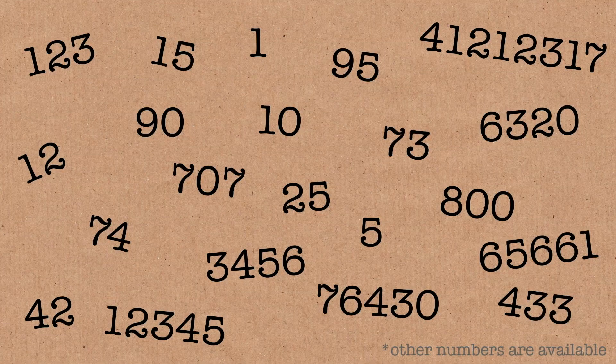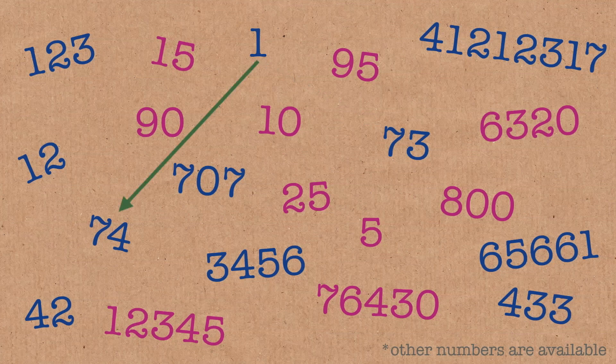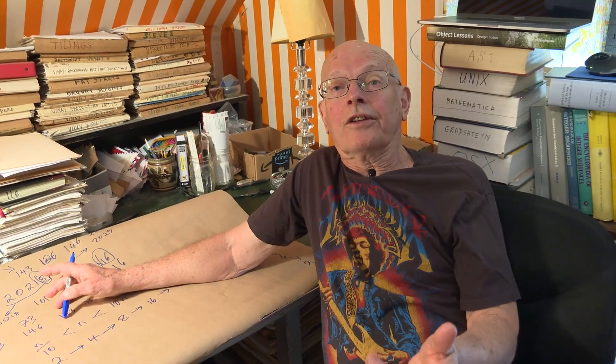If I give you any number, can we always get to 1? That's a very good question, and the answer is no. Look at all the positive integers in the world — there are two kinds. Those that end in 0 or 5, and they're all connected, and those that don't end in 0 or 5, and they're all connected. I can get from 1 to 73 and from 1 to 74, but I can't get from 1 to 10, 90, or 95 because they end in a 5.